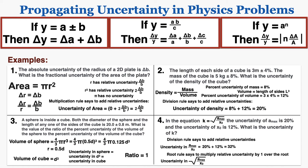Now we apply the square root rule, which says to multiply the relative uncertainty by 1 over the root — here 1 half — giving a final answer of 16%. So if the uncertainty of a_max is 20% and the uncertainty of x₀ is 12%, the uncertainty of k is exactly 16%. That's how you apply these rules together in more complicated problem solving to understand the uncertainty of more complex values in physics.